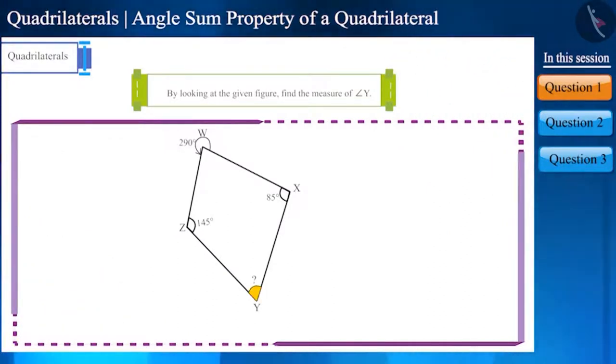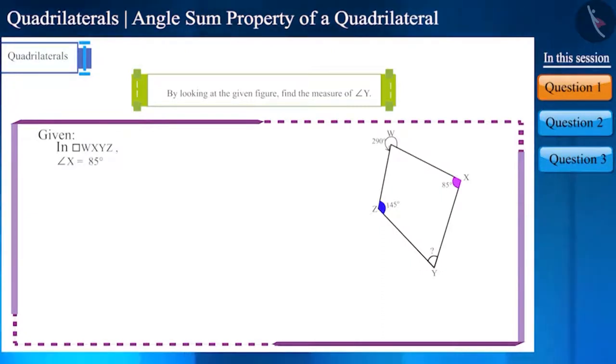Look at the given figure and find the measure of angle y. Friends, here we are given the measurement of two internal and one external angle of the quadrilateral, and we have to find the measurement of the remaining one angle.